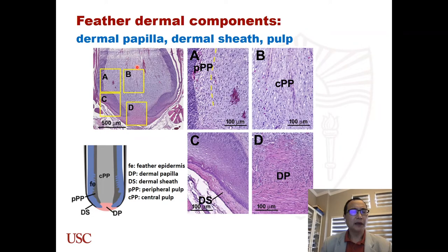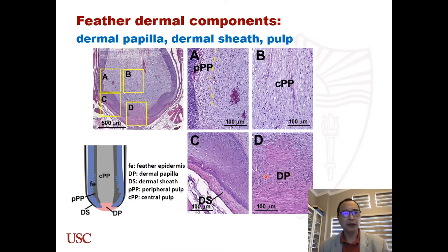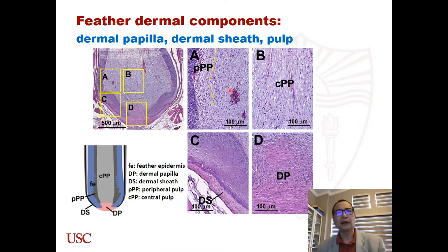This is a growth-phase feather follicle. We can find these different dermal components: dermal papilla, dermal sheath, and the pulp. We can clearly find the peripheral part of the dermal pulp and the central part of the pulp — their cell densities are different.